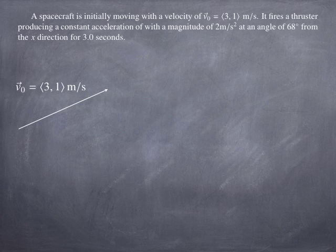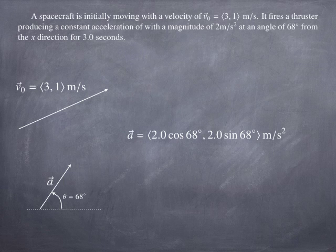We've got an initial velocity that's a vector, it's got an x component of 3 and a y component of 1 meter per second. Then the acceleration is a vector that is at an angle relative to the initial velocity, and we need to compute that vector. So the x component is going to be 2 times the cosine of 68, and the y component is going to be 2 times the sine of 68, just by simple trigonometry. You can calculate those values and you can get a vector representation of the acceleration.